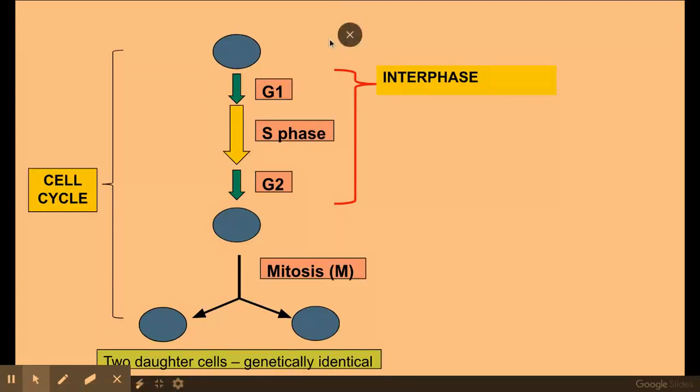So the cell cycle is made of four main parts: G1, S and G2, which comprise or make up interphase. This is where the cell spends the majority of its lifetime. After interphase, we have mitosis, which you learned about at GCSE, which produces two daughter cells that are genetically identical.